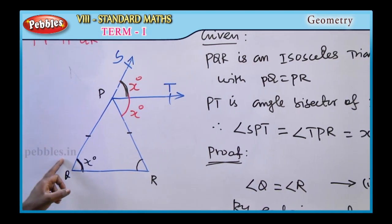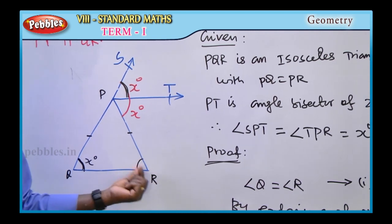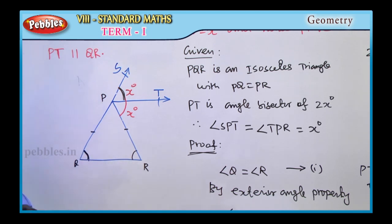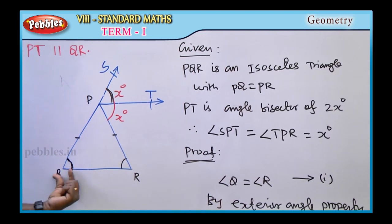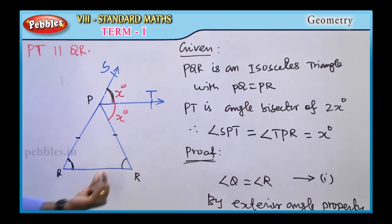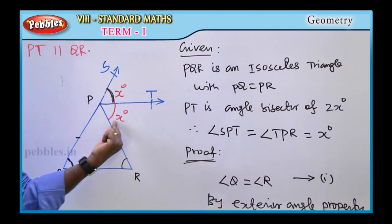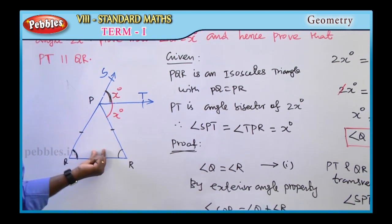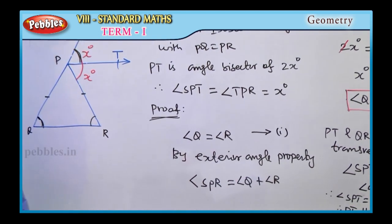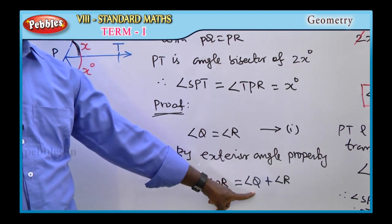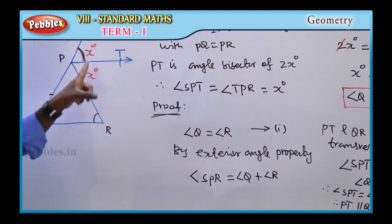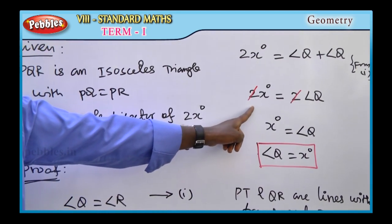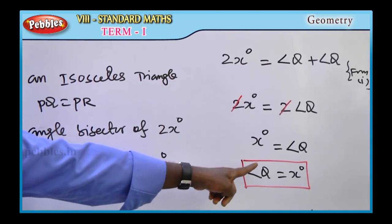This is isosceles triangle PQR. Therefore, angle Q equals angle R — that is the property of an isosceles triangle. We proved angle Q equals x degrees using the exterior angle property: 2x equals angle Q plus angle R. Since angle Q equals angle R, we get 2x equals 2 times angle Q, so x equals angle Q. Therefore angle Q equals x degrees. First proof complete.